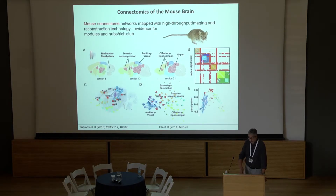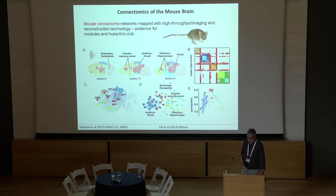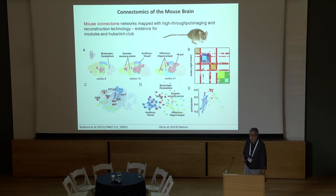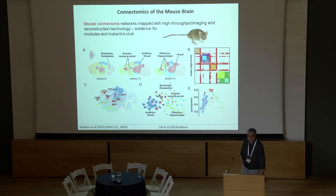Moving to the efforts of the Allen Institute in the mouse connectome — a very important effort for the field — the connectivity data has been analyzed in multiple ways, including in a study by Ed Bulmore and Mika Rubinov looking at modularity, which is once again evident, and rich club organization. Highly connected brain regions in the cingulate cortex, prefrontal cortex, thalamus, and other subcortical regions are not only highly connected but also densely interconnected with each other, more so than expected by chance.